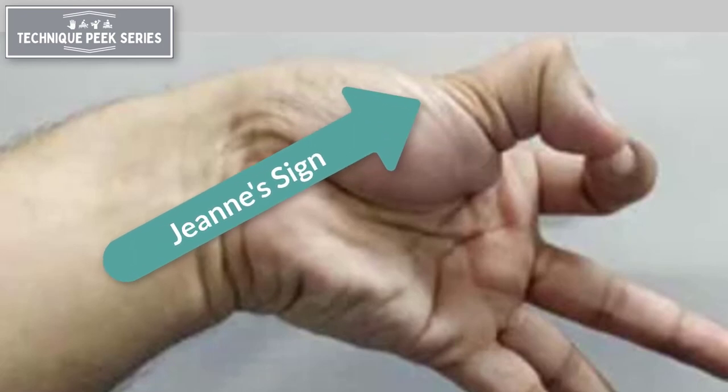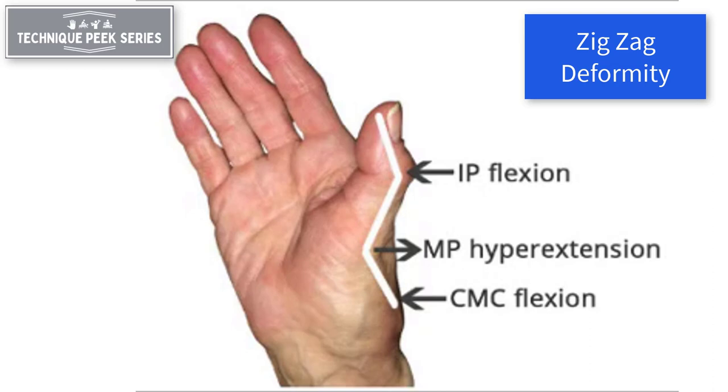Now it's important that before a therapist attempts this test is to rule out zigzag deformity beforehand. So if someone has arthritis and it has implicated the MP joint and caused hyperextension in that joint along with a hyperflexed IP, the result of this test is going to look a bit skewed.